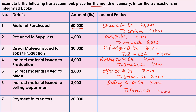Our next transaction is payment to creditors. Creditors are our liabilities, and when we pay liabilities, the decrease in liabilities results in a debit. Entry: Creditors Account Dr. to Cash Account — Rs.30,000.